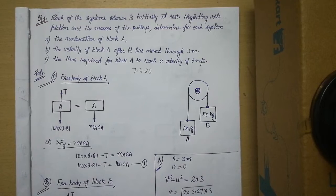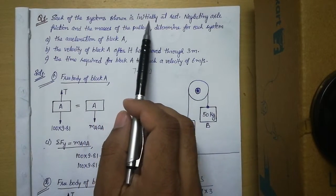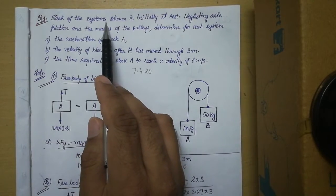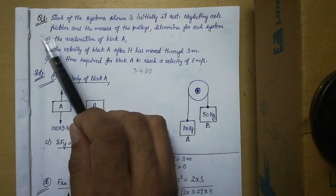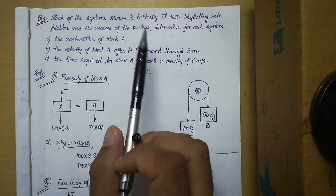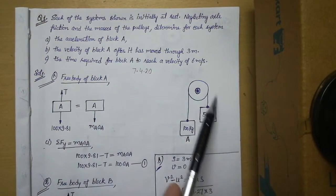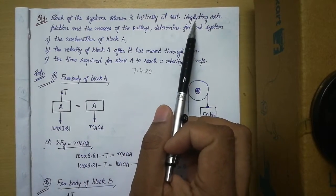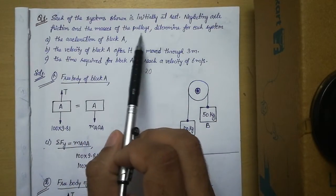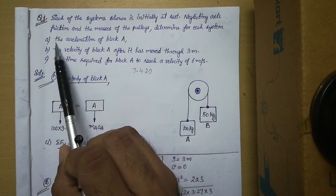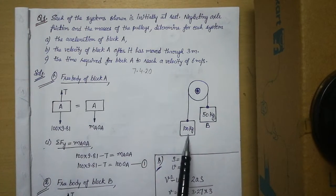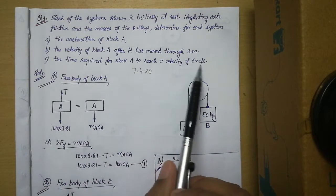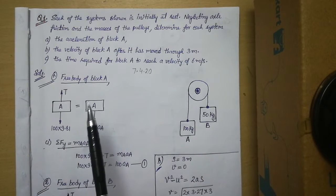Let us read the problem. It says each of the systems shown is initially at rest. In this file two diagrams are given but the statement is the same, so it is applicable to both diagrams. I will discuss both systems one by one. Neglecting axle friction and the masses of the pulley, determine for each system: the acceleration of block A, the velocity of block A after it has moved 3 meters, and the time required for block A to reach a velocity of 6 meters per second.